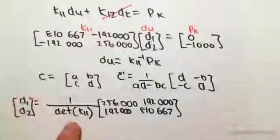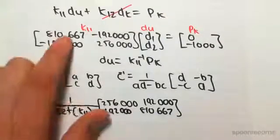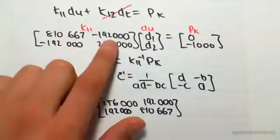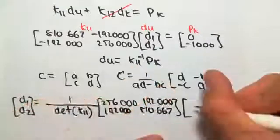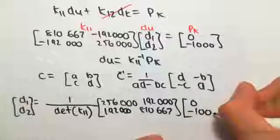So that would be the inverse. Once again, I just haven't written out because I don't have space, but the determinant of k11 would be that by that minus that by that, very simple. Now that's outside of the p known forces, which is just zero, minus a thousand.